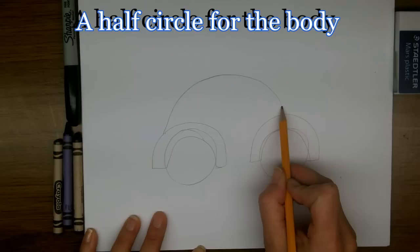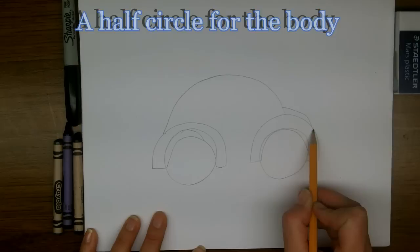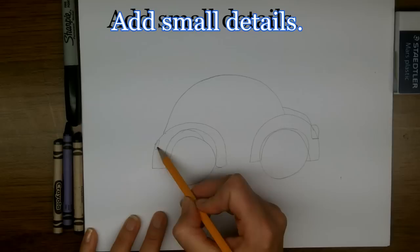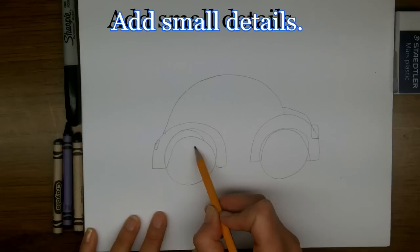Then we're going to add the hood curving over the top of that front fender and then we'll add some details, like some lights and hubcaps.